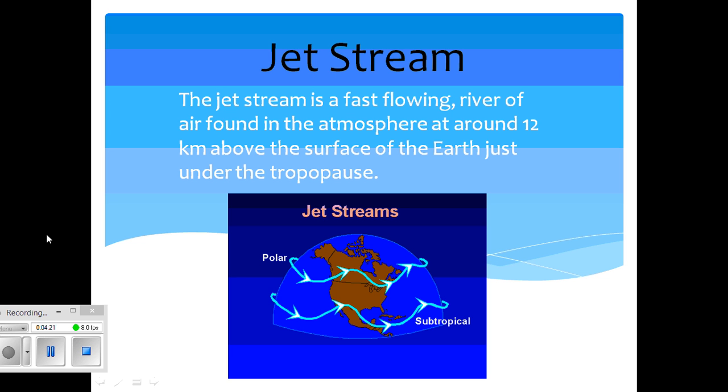Jet stream. Now the jet stream is a fast flowing river of air found in the atmosphere at around 12 kilometers above the surface of Earth, just under the tropopause.